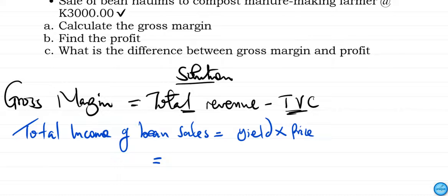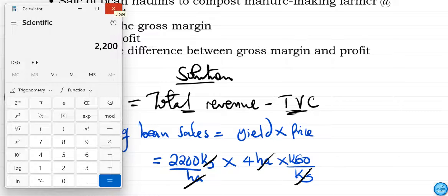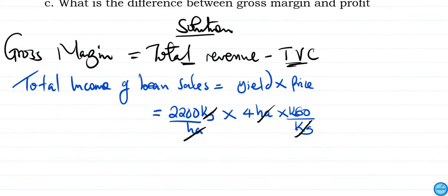So we have 2,200 kg per hectare multiplied by 4 hectares — hectare and hectare cancel — then multiplied by 6 kwacha per kg — kg and kg cancel. Using a calculator: 2,200 × 4 × 6 = 528,000. So total revenue is 528,000 kwacha.